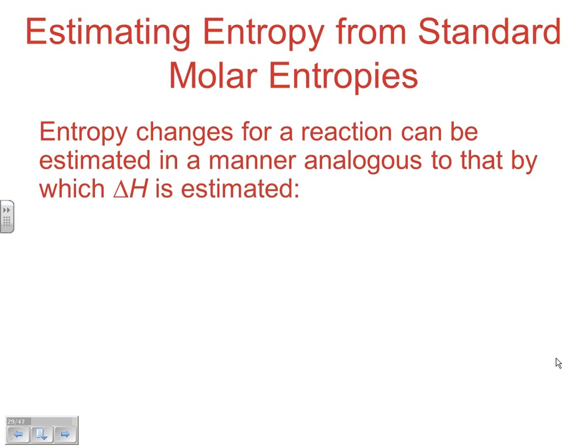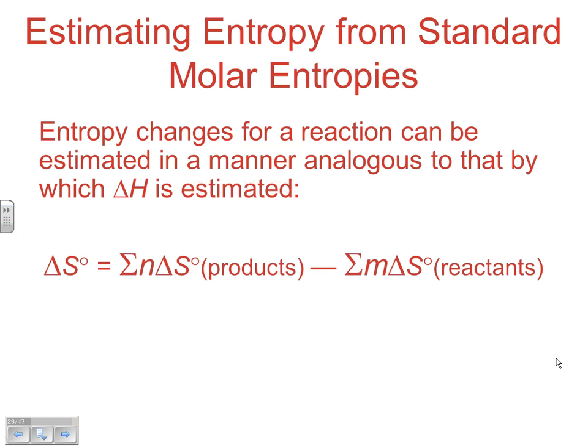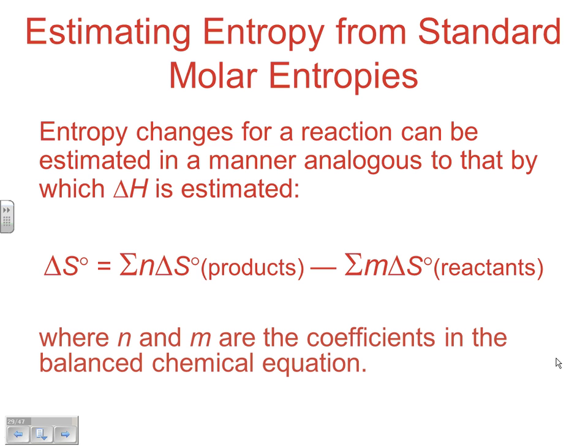Entropy changes for a reaction can be estimated in a similar manner to what we did with delta H's. We can use the same formula with standard entropies: ΔS° = ΣnΔS°(products) - ΣmΔS°(reactants). N and M represent the number of moles because the values are molar enthalpy, so we'd have to multiply by the number of moles.